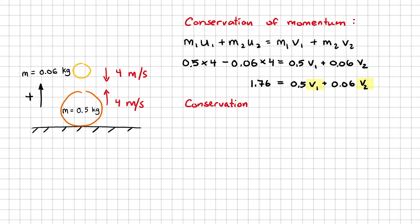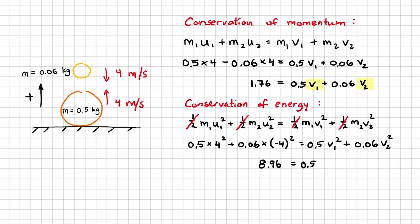But luckily, I know that energy is also conserved. So I can write a second equation that considers their kinetic energy. The kinetic energy is half Mv squared. I can cancel out the halves before I substitute. It simplifies down to this.